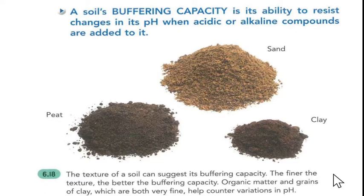Other than pH, soil texture and soil components also matter. If your soil has peat and clay, that's great for buffering — it can neutralize itself easily. But as you increase the quantity of sand, it becomes problematic because sand is porous and leaches water into lower soil levels. However, you do need some sand, because too much clay or peat can lock water in and cause root rot. You need a perfect balance between permeability and water retention.